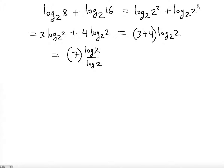And keep in mind that whenever you don't see the base, it's automatically assumed that it's 10, right? So log 2 base 10 divided by log 2 base 10 is 1. So this is going to be 7 times 1, which is equal to 7.